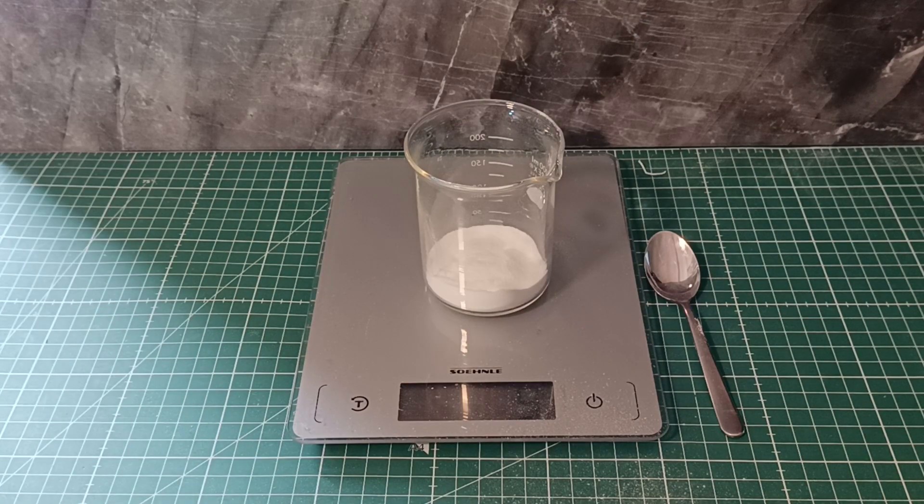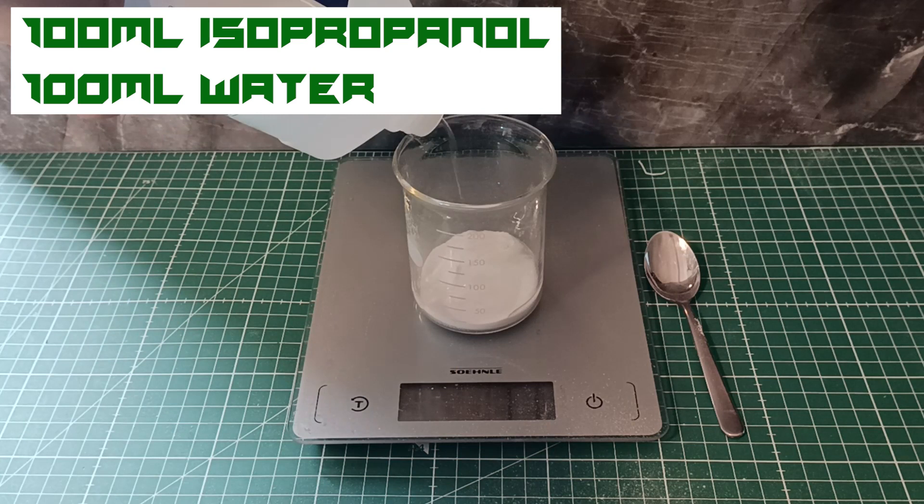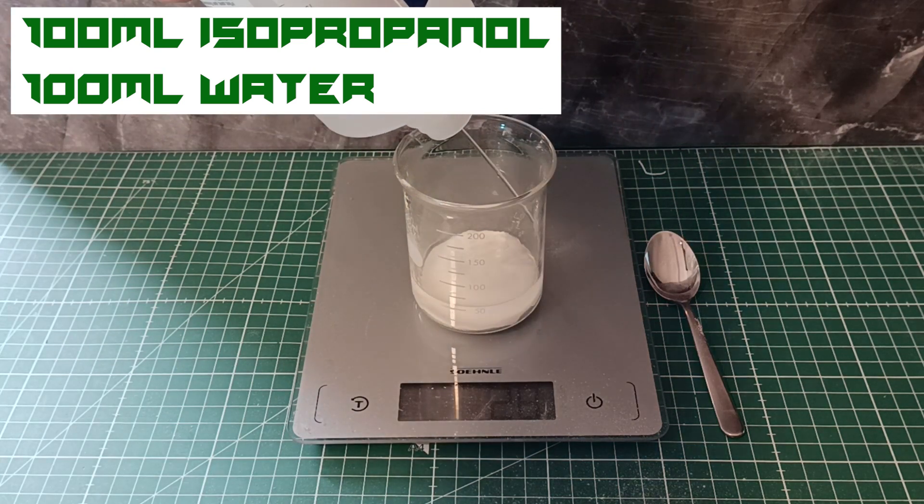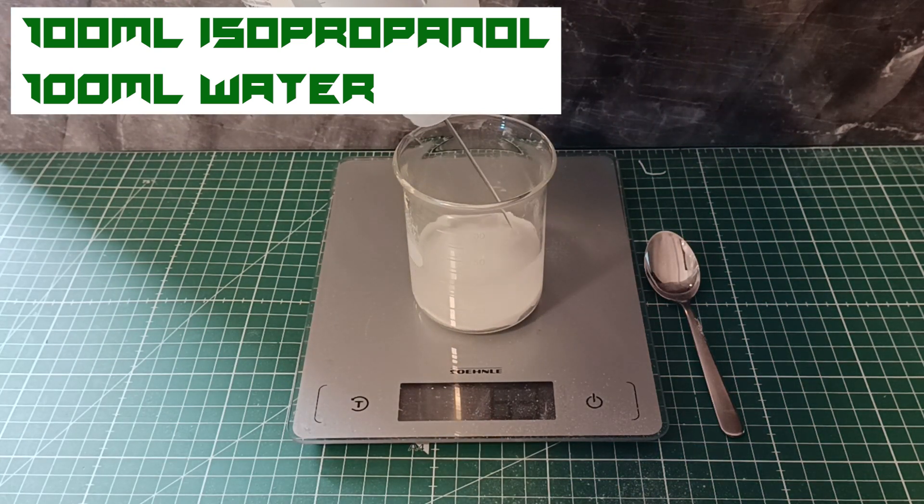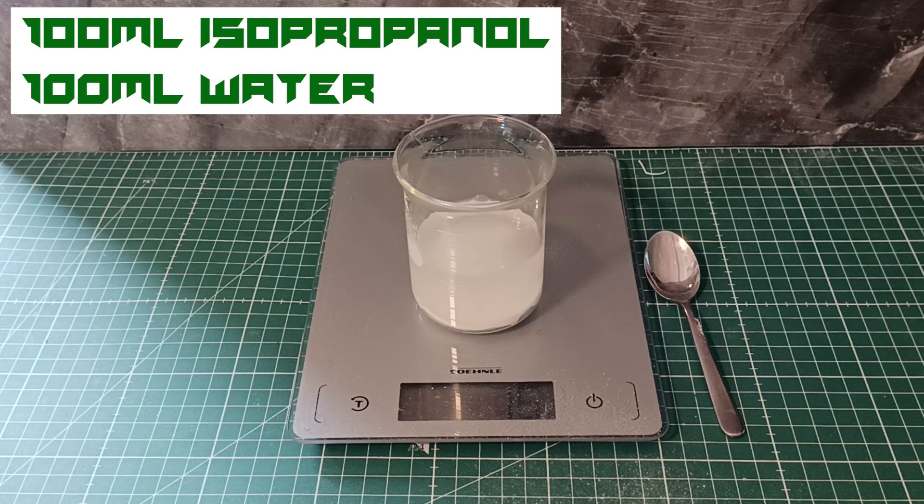To top it off, we're going to be adding 100 milliliters of isopropanol and 100 milliliters of water. Okay, we got the isopropanol. Now, you can already see this mixture is turning cloudy, but there's still a lot of dust at the bottom.